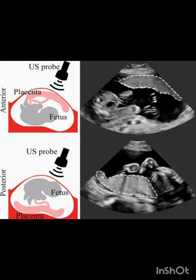The placenta typically attaches to the uterine wall, and its position can vary. The most common positions are anterior, on the front wall of the uterus; posterior, on the back wall; fundal, at the top of the uterus; or lateral, on either side.